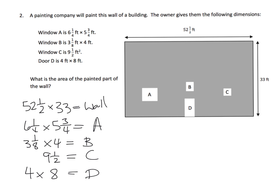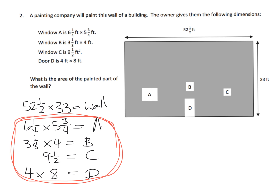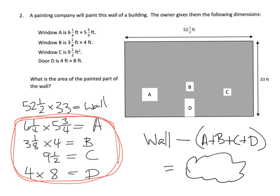So what's our strategy? We're going to multiply all of these and get all the answers — although there is no multiplication needed for C. Then we're going to take these four answers, add them together, and subtract from the wall. We take the answer for the wall and subtract our answer when we add up A, B, C, and D. There's a lot of work, but the strategy is pretty straightforward: get the area of the whole wall, find the area of each of the four little pieces not getting painted, add them together, and then subtract.